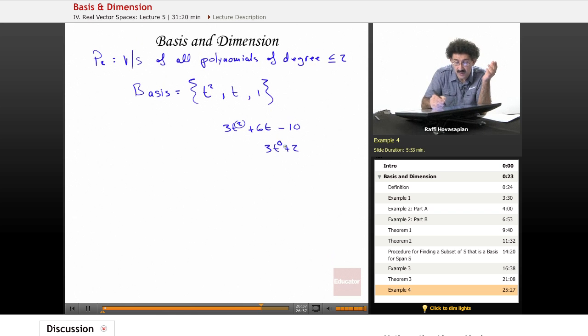It's a degree 2, this is a degree 1, degree less than or equal to 2. So this one has to be in there. So P2 has dimension 3.